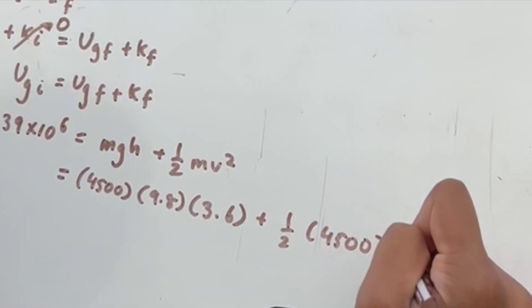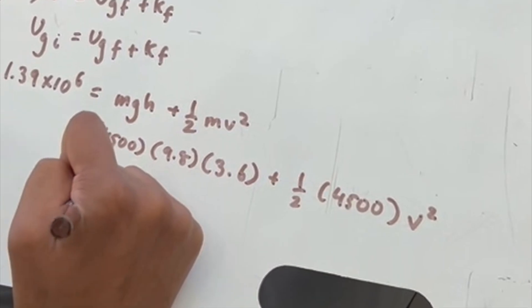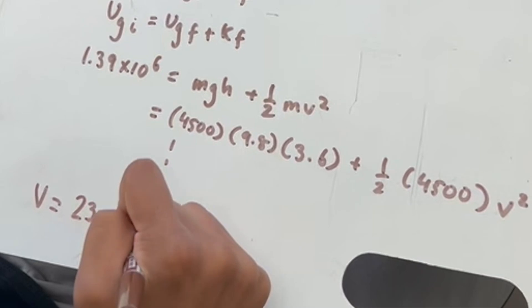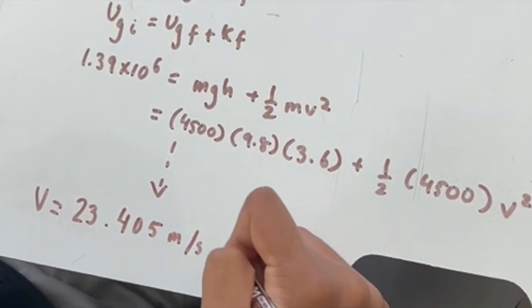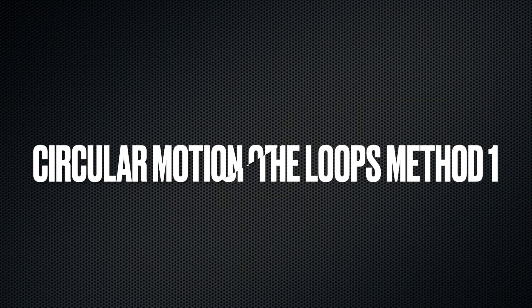So the final velocity we get is 23.41 meters per second, which is a really fast 52 miles per hour.